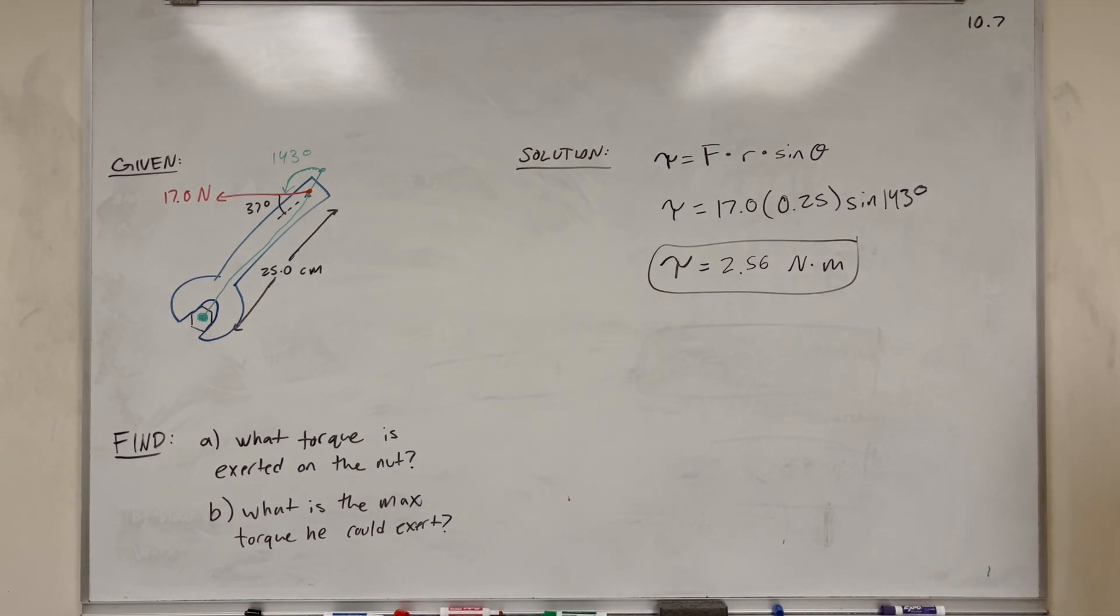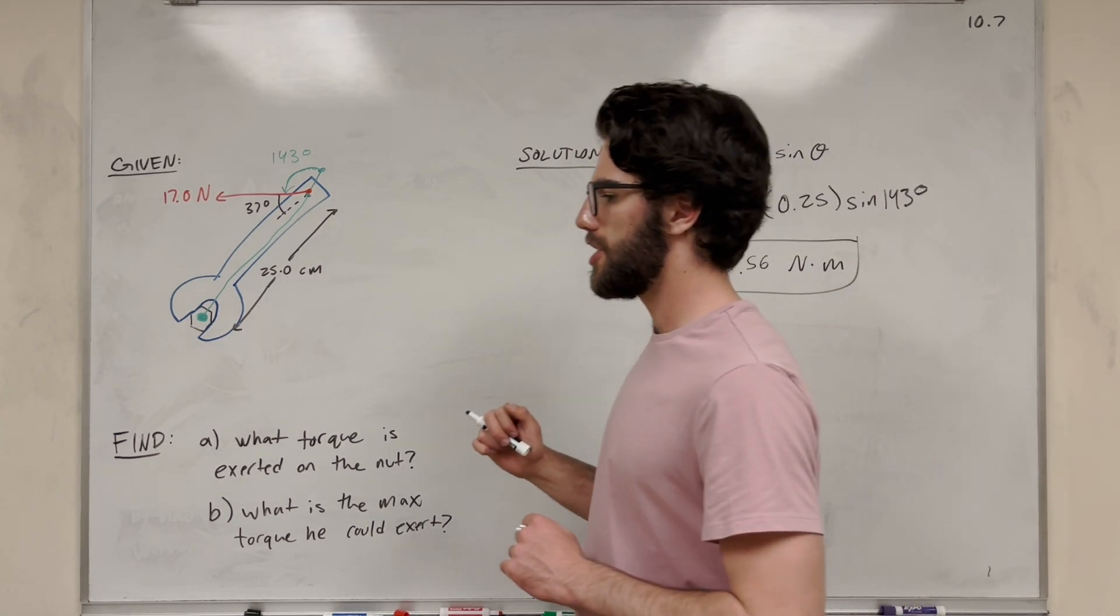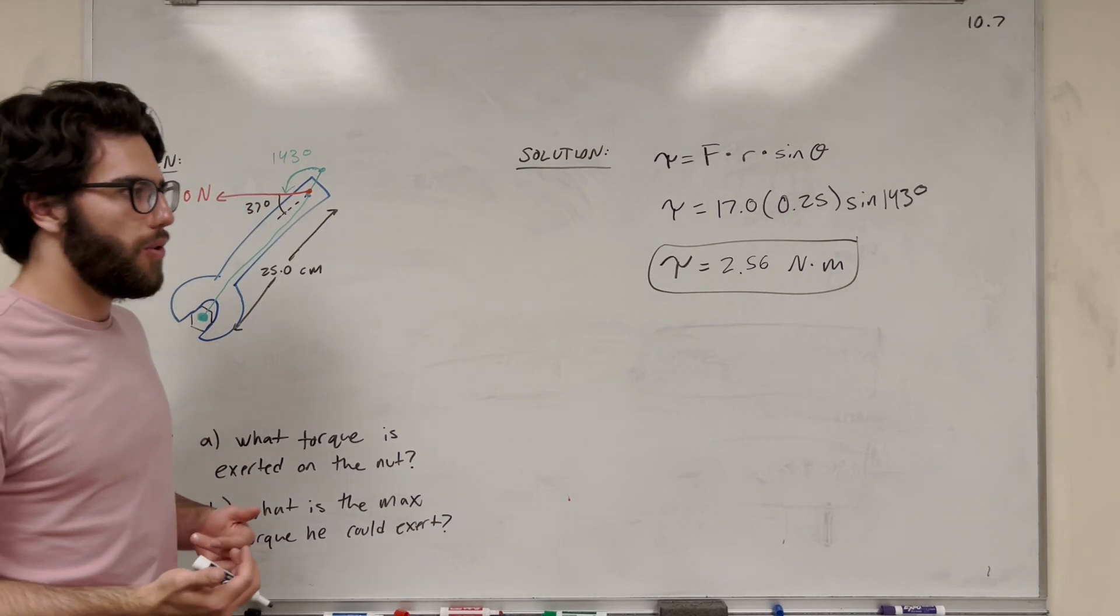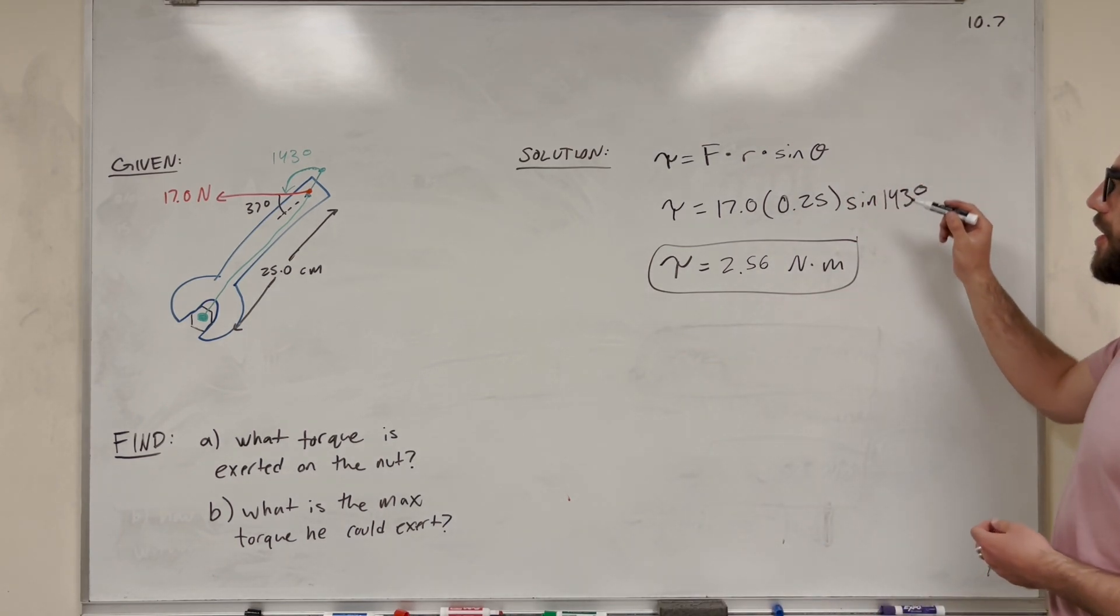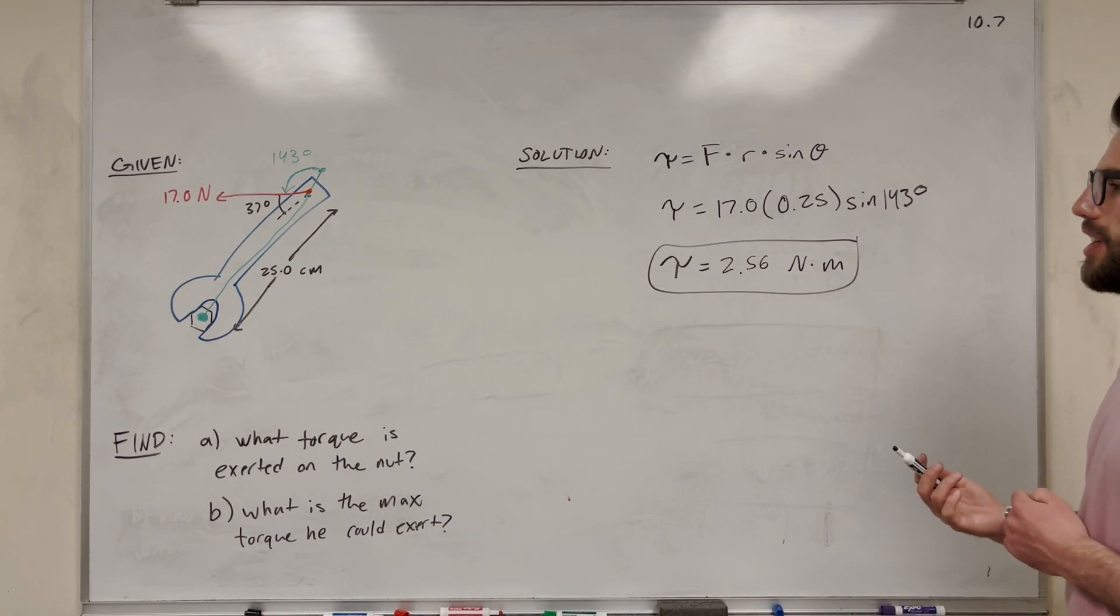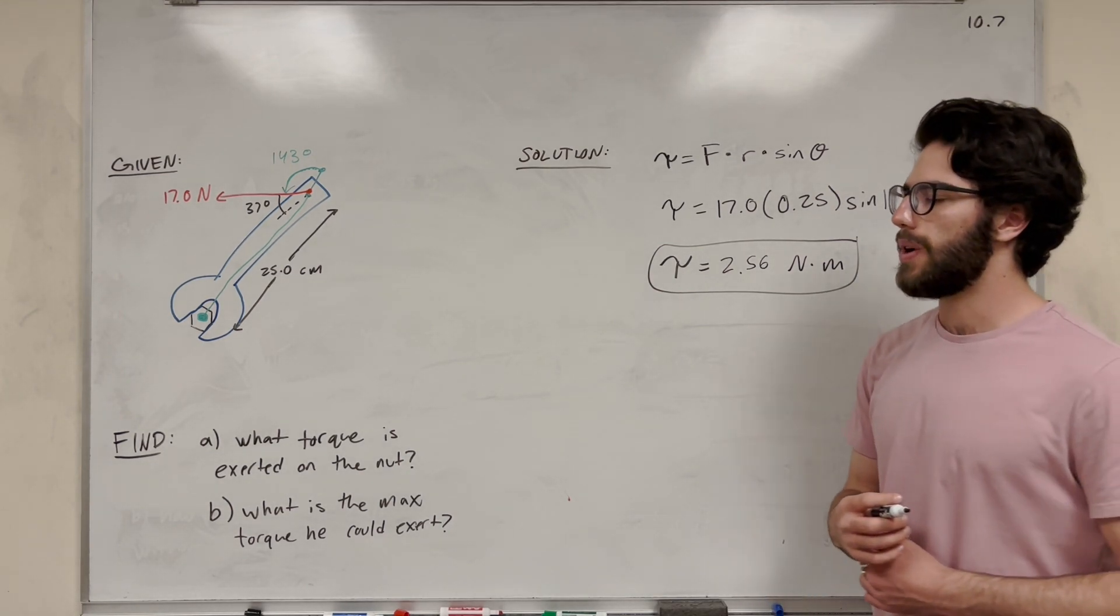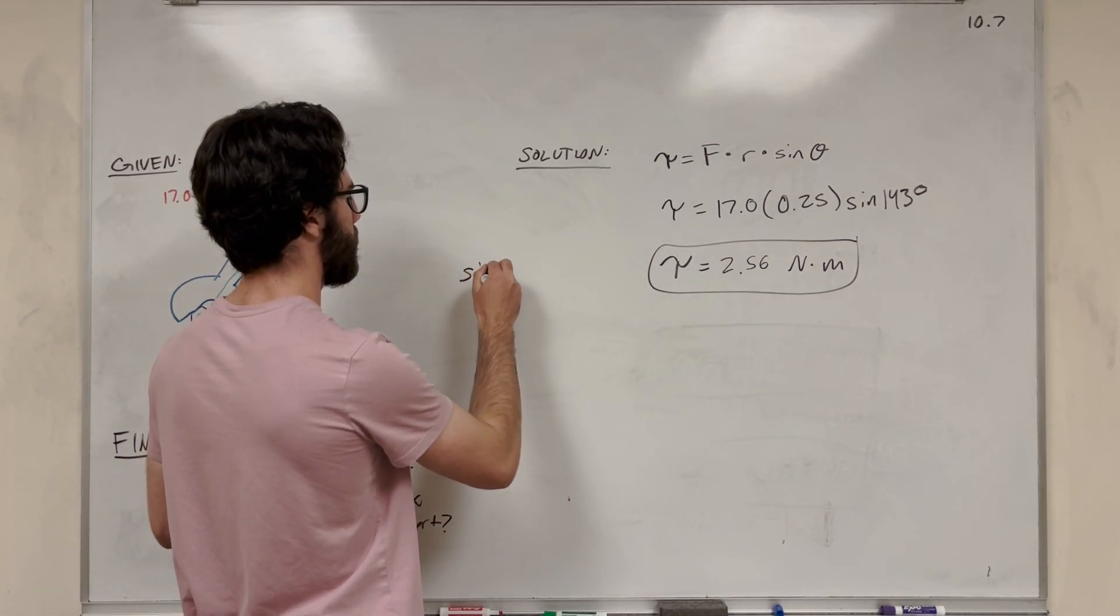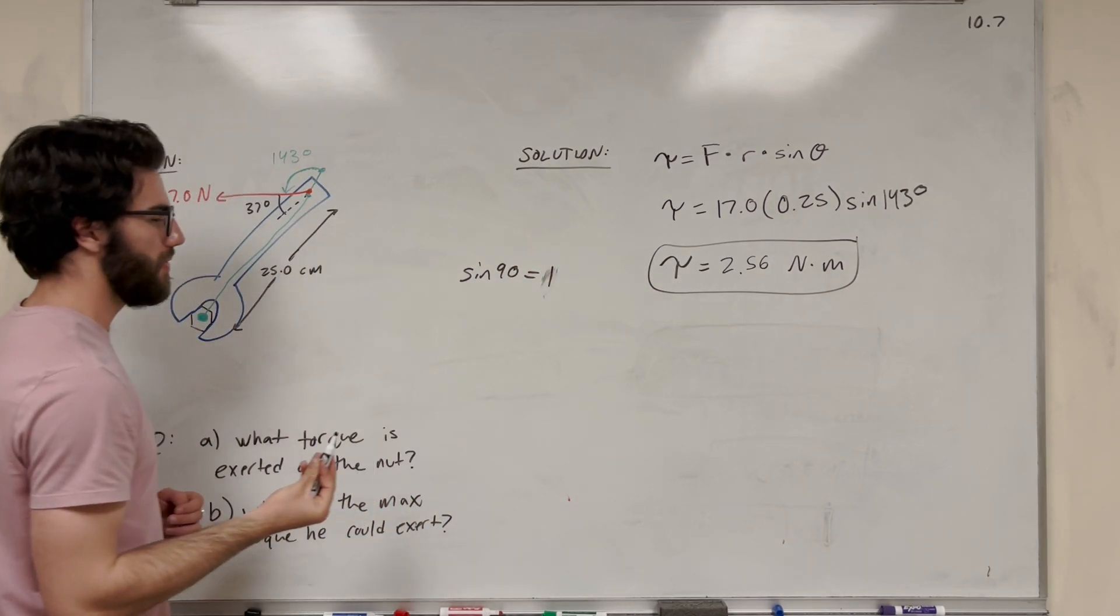So for part B, we're asking what's the maximum torque that he could exert on this wrench. Right now, he's applying it at a 37-degree angle. It's not that much force. He could apply more force, and how would we do that? Well, we could change the angle. Sine of 143 is not a very big number. It's probably like half or something similar to that. So how can we maximize that angle? Well, sine is maximized at 90 degrees, because sine of 90 is equal to 1. And that's the maximum value you can get with sine.